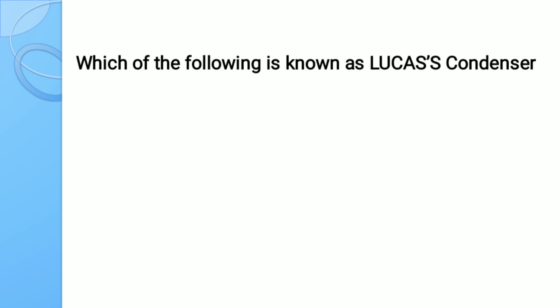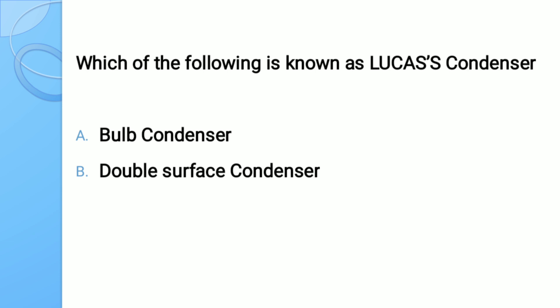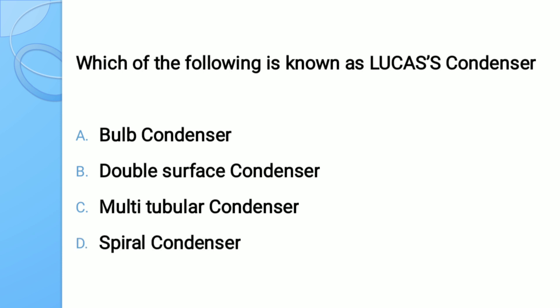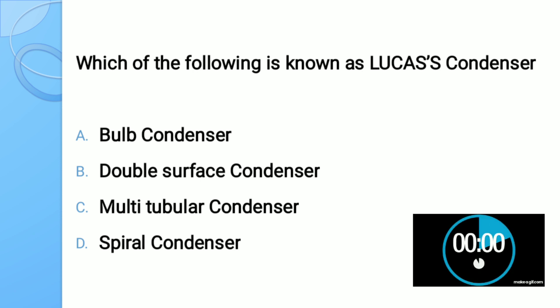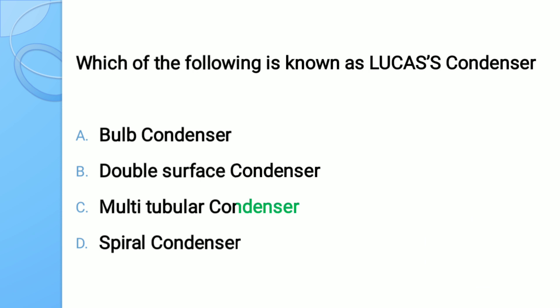Question number six: Which of the following is also known as a Lucas condenser? Options: A) bulb condenser, B) double surface condenser, C) multi-tubular condenser, D) spiral condenser. The correct answer is multi-tubular condenser — it is also known as Lucas condenser.